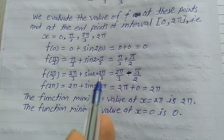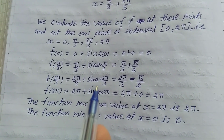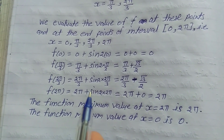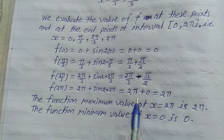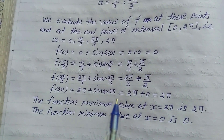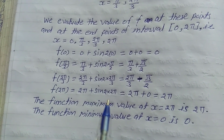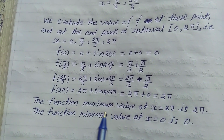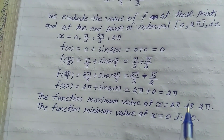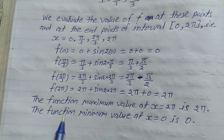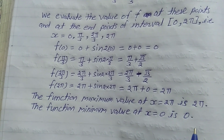Among these four values, the maximum value of f(x) is 2π, occurring at x = 2π, and the minimum value of f(x) is 0, occurring at x = 0. So the function's maximum value at x = 2π is 2π, and the function's minimum value at x = 0 is 0. That is the solution.